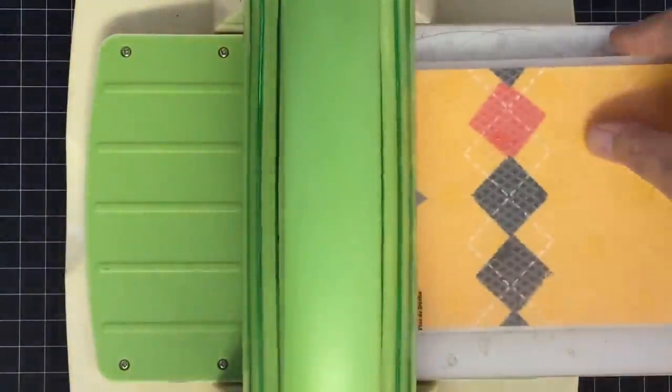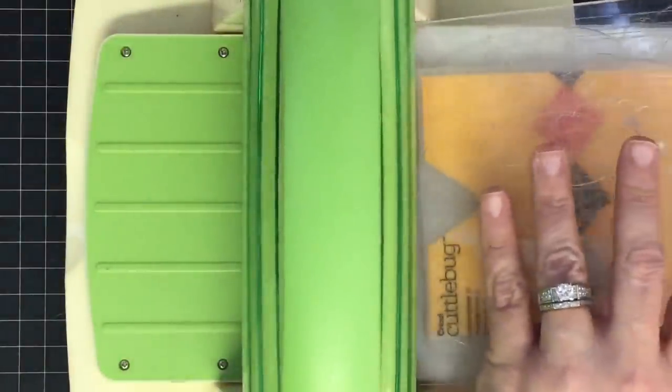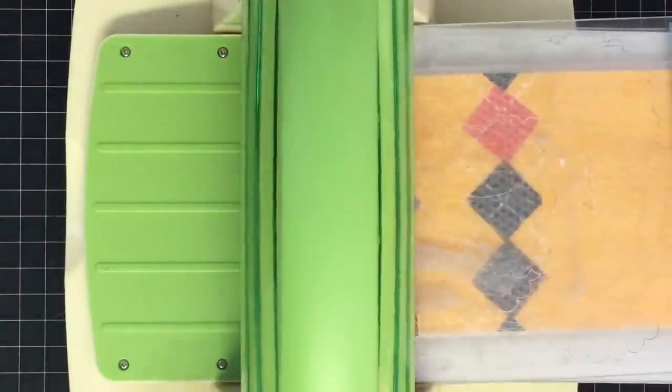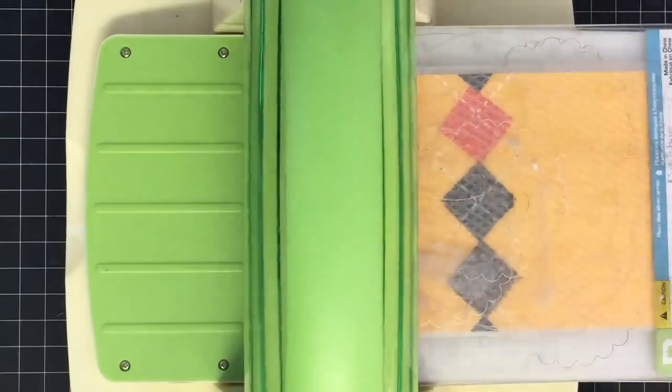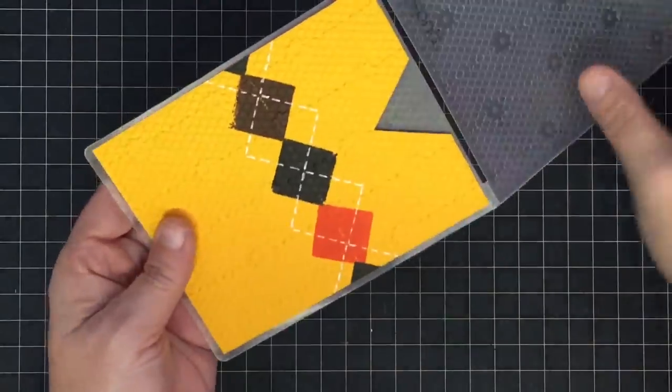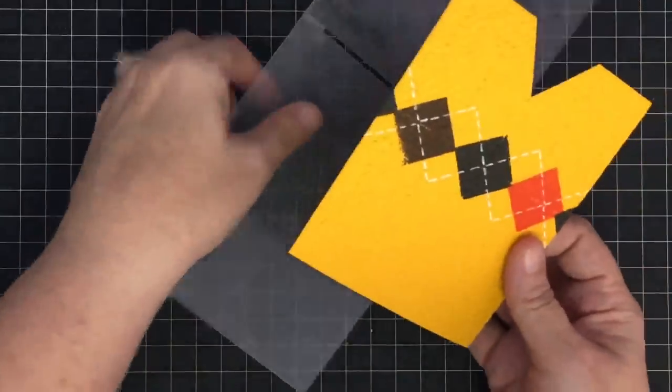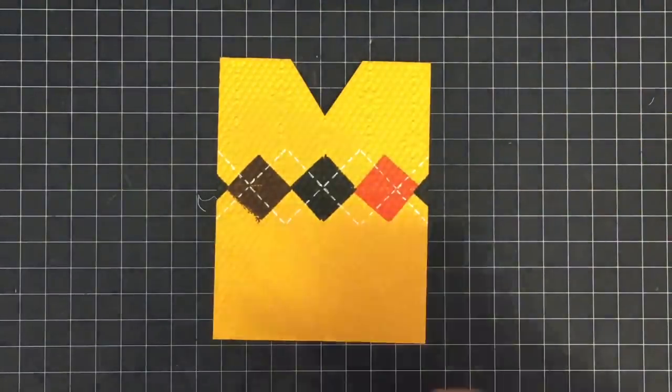I've put that card front in there and I'm going to place a B plate on top and then run this through. Now that it's done, let's take it out and see what we got. Oh, that's pretty cute. That looks pretty sweater-textury. I think that works really well.